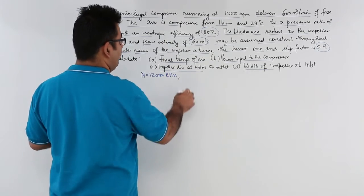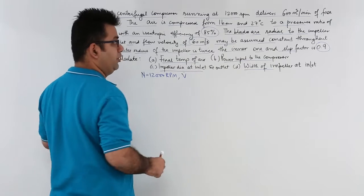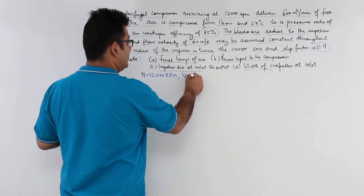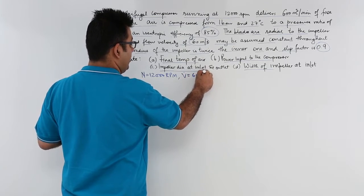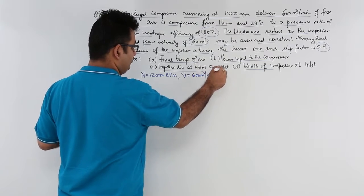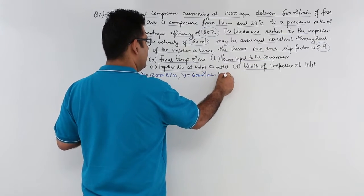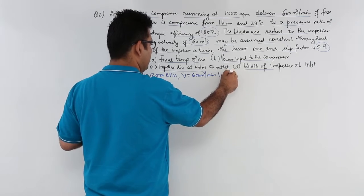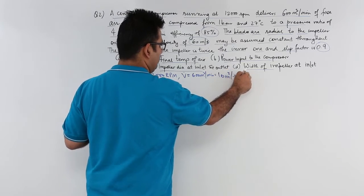Then we have the volume flow rate which is 600 meter cube per minute which is 10 meter cube per second.